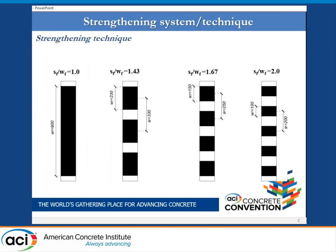The columns were confined in two different configurations. In the first, on the left, the PBO-FRCM jacket was wrapped continuously on the column. In the second, it was wrapped discontinuously. Three different configurations were adopted for the discontinuous wrapping, varying both the length of the FRCM strips (wf) and their spacing (sf).